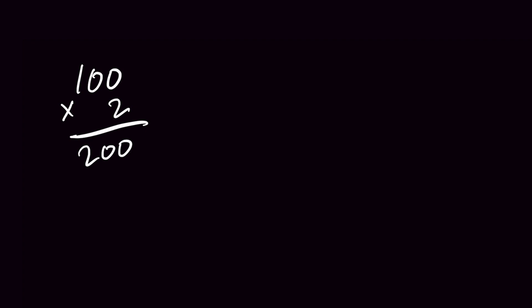Now the next step: you're gonna take that number you just got and move the decimal point over one spot. So in this example it would be moving that decimal point over one, so we're gonna get 20. So 200 plus 20 — we're gonna be at 220 pounds.